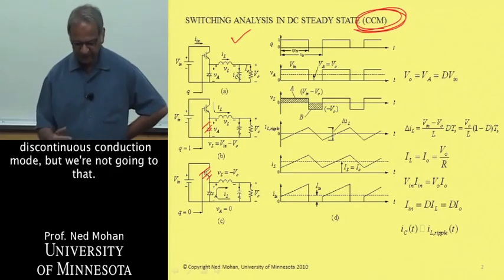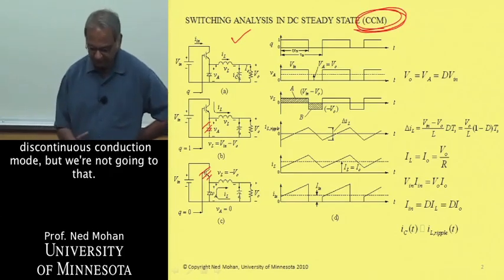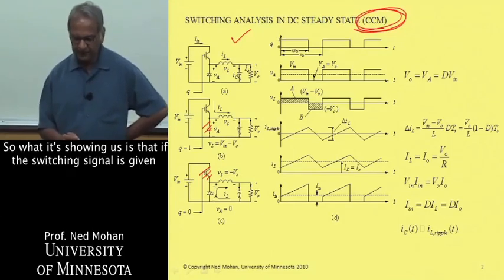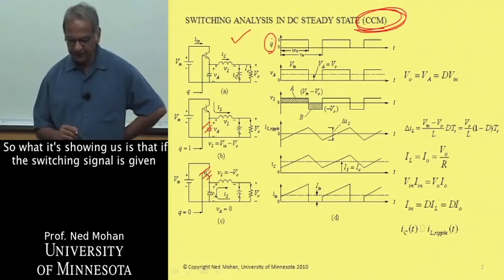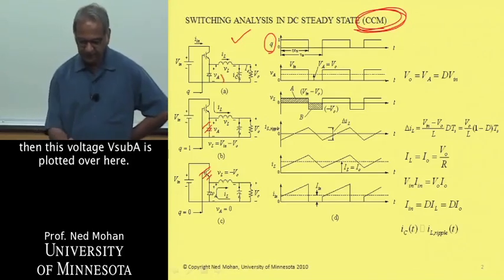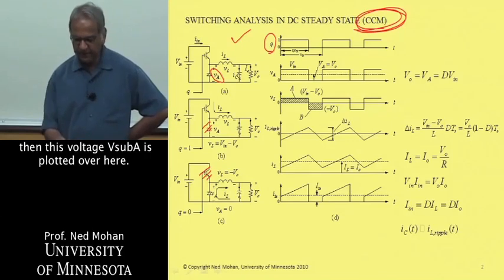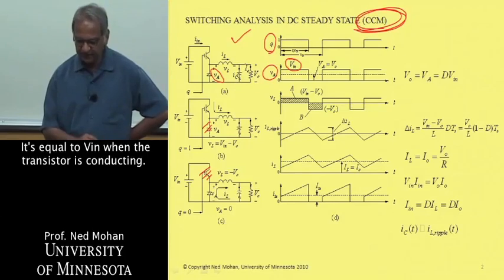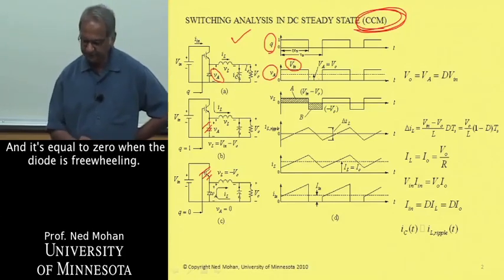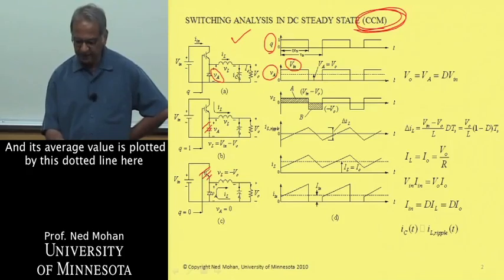There's another mode here, discontinuous conduction mode, but we'll not go into that. So what it's showing us is that if the switching signal is given with some duty ratio D, then this voltage V sub-A is plotted over here. It's equal to VN when the transistor is conducting, and it's equal to zero when the diode is freewheeling. And its average value is plotted by this dotted line here.